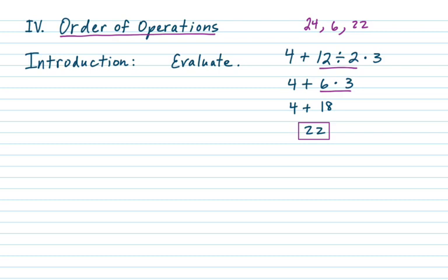It's important that you know the order of operations, otherwise you're going to get wrong answers. The good news is that if you have a nice calculator you can put all of these expressions in and they look just like they do on paper, and your calculator should give you a correct answer. But you should have some balance — you ought to be able to do some things by hand, and also on the calculator, because sometimes the numbers aren't going to be nice.